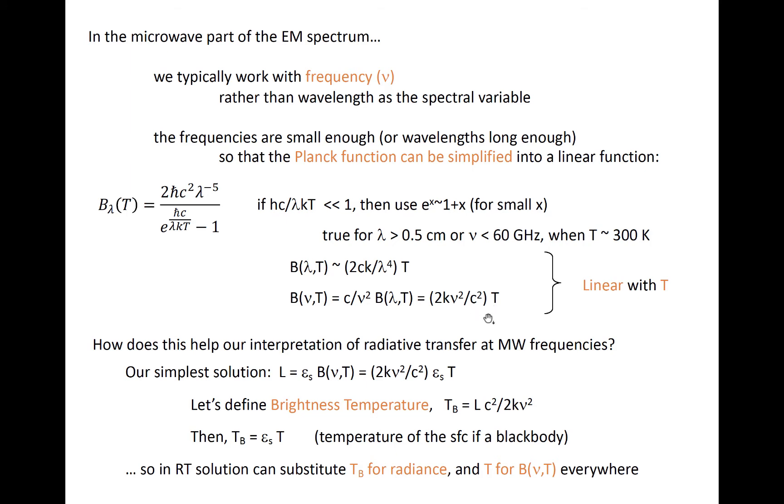After doing some algebra to cancel like terms in the fraction, we're left with the following expression that simply states that the microwave blackbody radiance is linearly proportional to temperature. Thus, the radiance L is just emissivity times the Planck radiance, and we can define a microwave brightness temperature T sub V that is simply emissivity multiplied by the actual temperature.